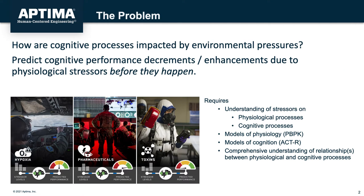Human cognition is constantly affected and constrained by the environment, and decades of research in mathematical and computational modeling has shown how our interaction with the environment constrains and facilitates cognition and action. But until relatively recently, physiological stressors have been largely ignored in formal models of cognition.